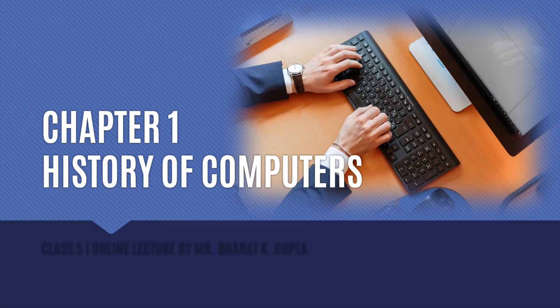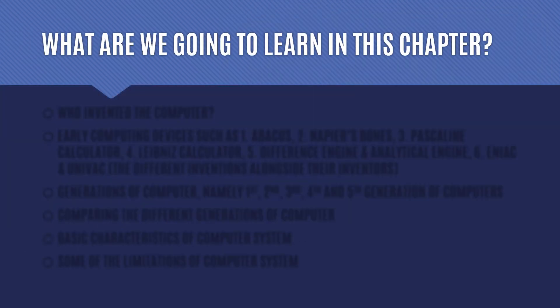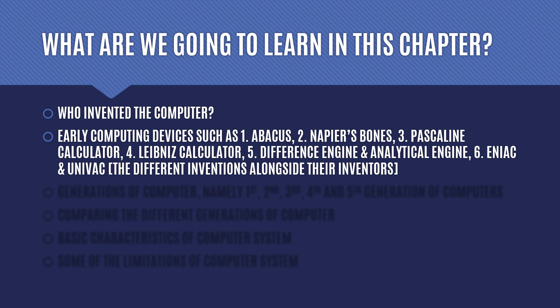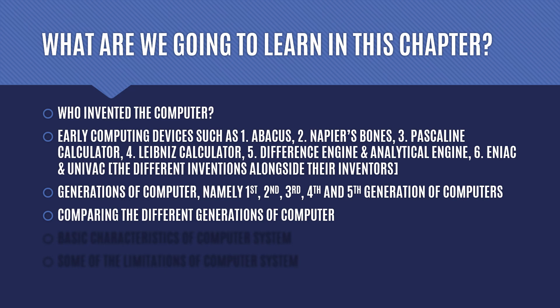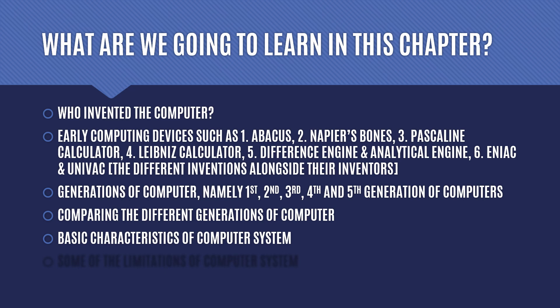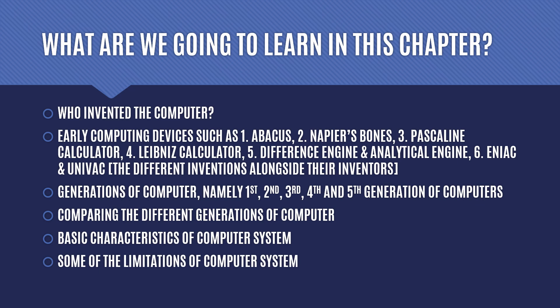This is the history of computers chapter for class 5 computer science. In this chapter we are going to learn several topics: who invented the computer, the early computing devices and all the calculating devices developed throughout history, the different generations of computer — first, second, third, fourth and fifth generation — and we'll compare their basic characteristics and limitations.